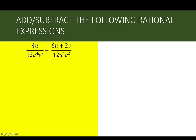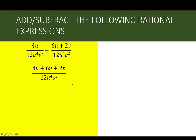Let's add these two rational expressions: 4u over 12u to the fourth v squared and 6u plus 2v over 12u to the fourth v squared. The first thing to do is check the denominators. Since the denominators are the same, all we have to do is combine the numerators. We copy the common denominator and add the numerators. Notice that 4u and 6u are similar terms, so combining them gives 10u.